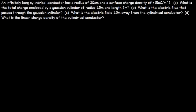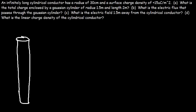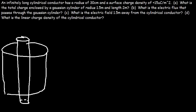Let's begin by drawing a picture. We have a cylindrical conductor, and outside of that we have a larger cylinder — this is going to be the Gaussian cylinder. There is a positive charge uniformly distributed throughout the cylindrical conductor, and that positive charge rests on the surface of that conductor.